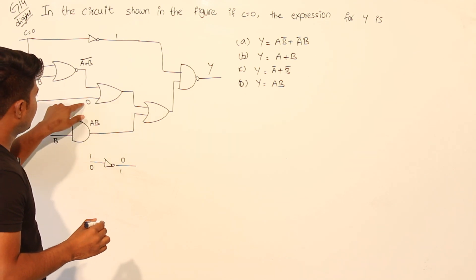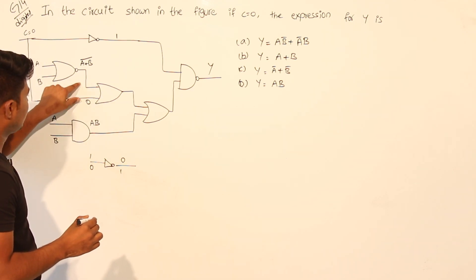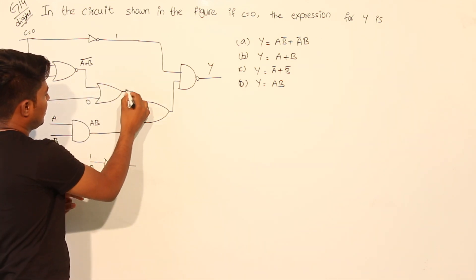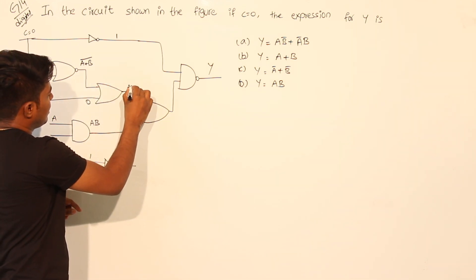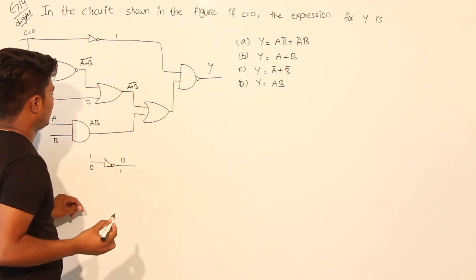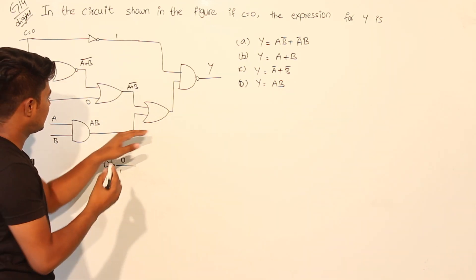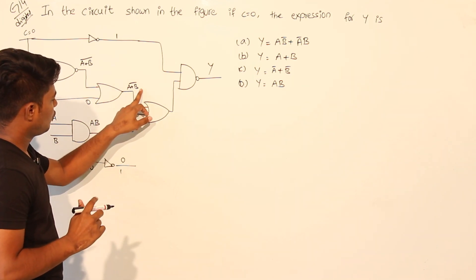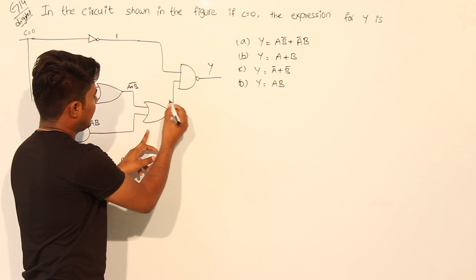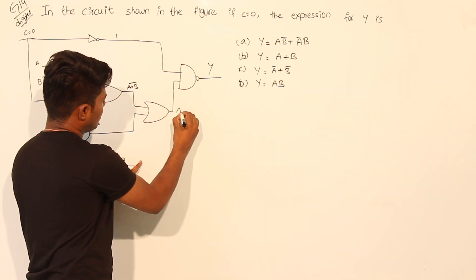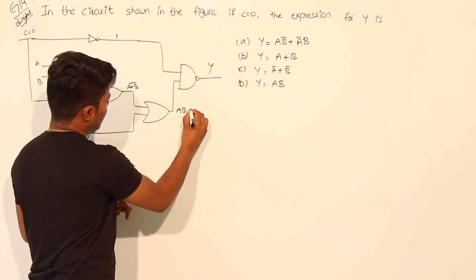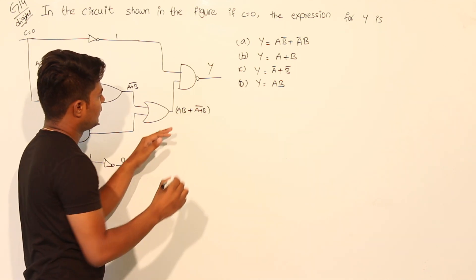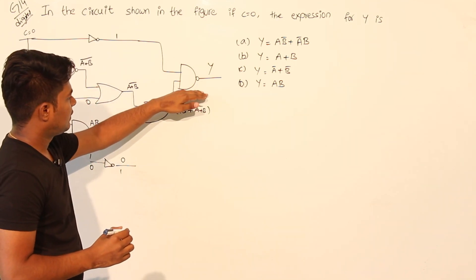C equal to 0 is also given as input here. This is the OR gate — if any one of the inputs is 0, then the output will be the other one. So the output here will be (A + B) bar. For this OR gate, one input is A dot B and another input is (A + B) bar, so this makes the sum of these two things: AB + (A + B) bar.